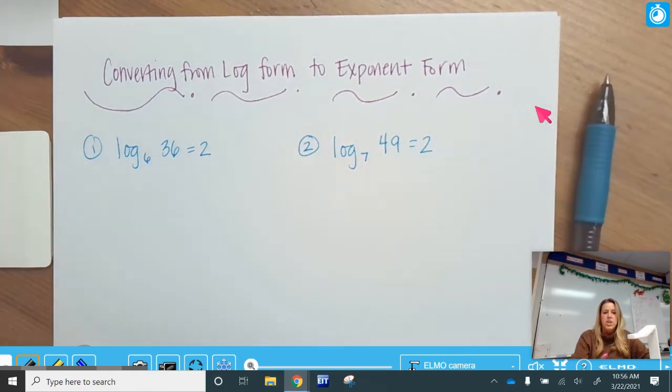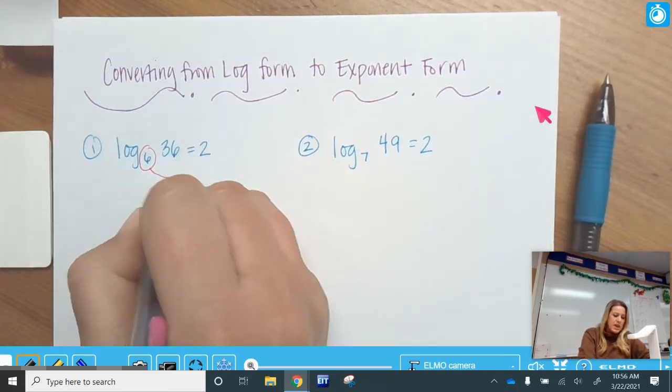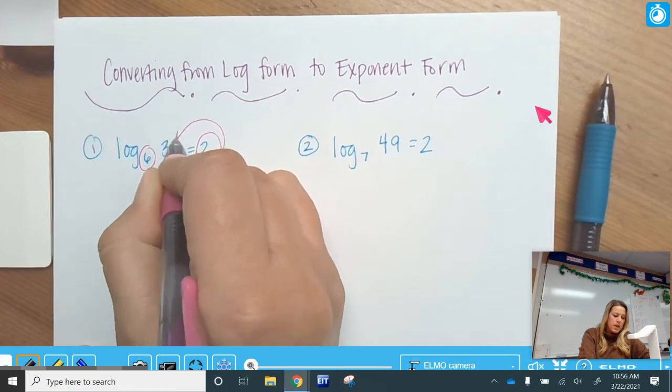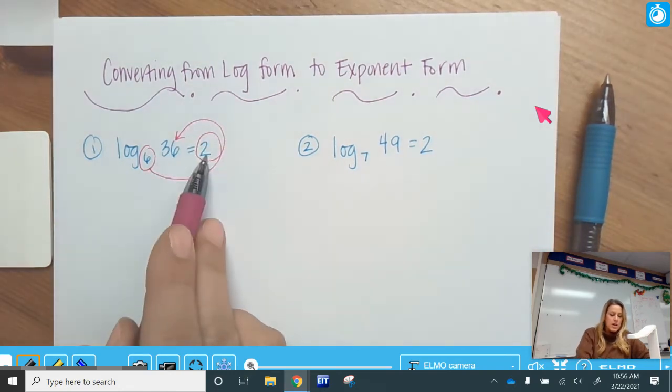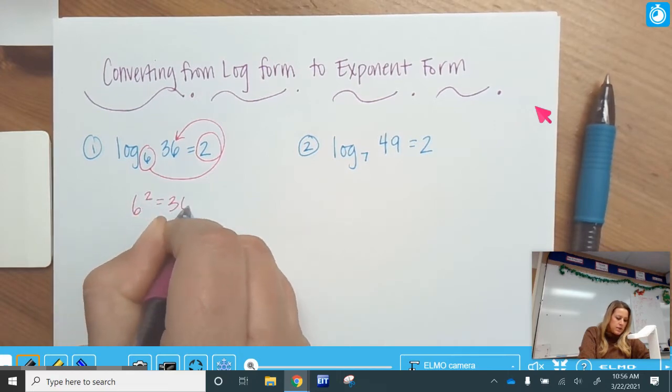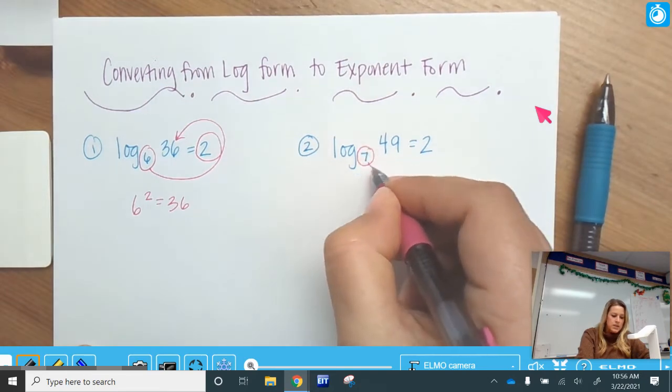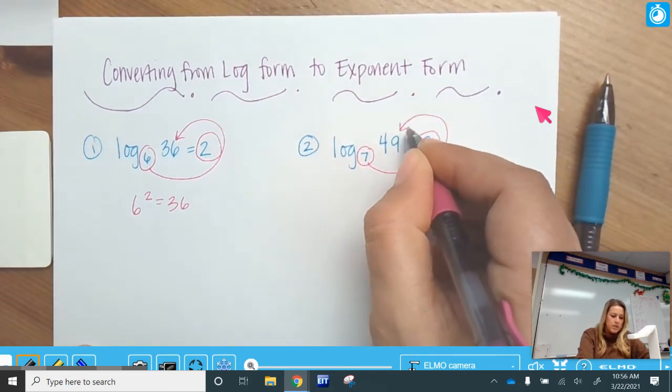So what's easy about changing from log form to exponent form is you take the base, so it goes base, exponent, answer. I do a little loop-de-loop. Base, exponent, answer. So this one, base, loop-de-loop, around the world, exponent, answer.